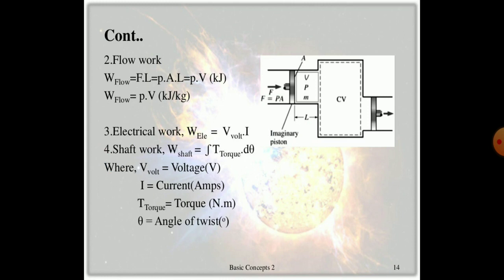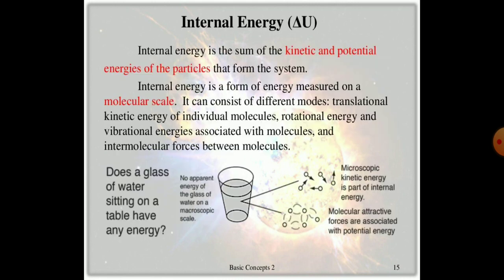Flow work includes electric work and shaft work, which can be obtained at the compressed level. All of these are done with the help of internal energy, denoted by delta U. Internal energy is the sum of kinetic energy and potential energy of the particles that form the system.